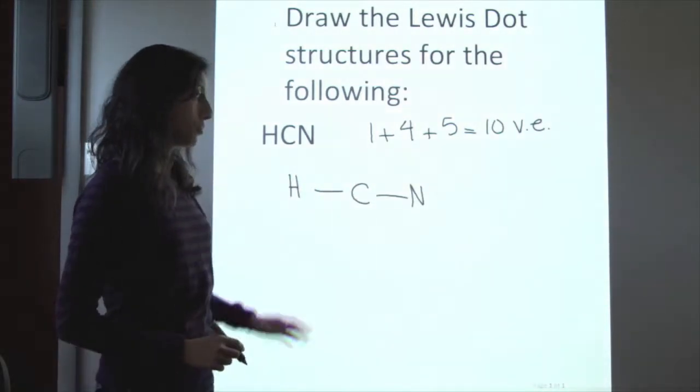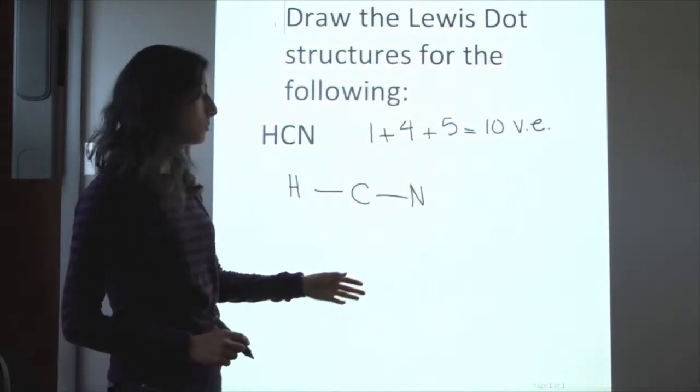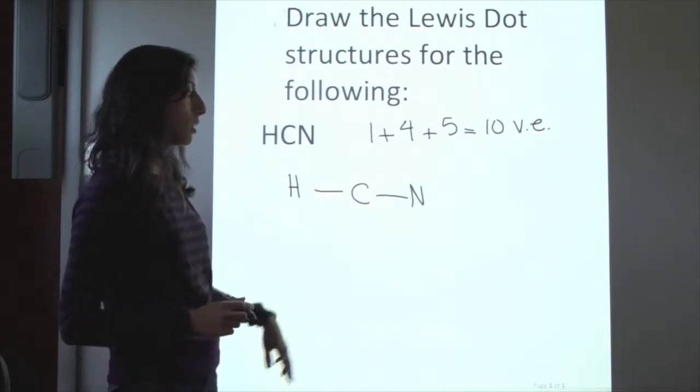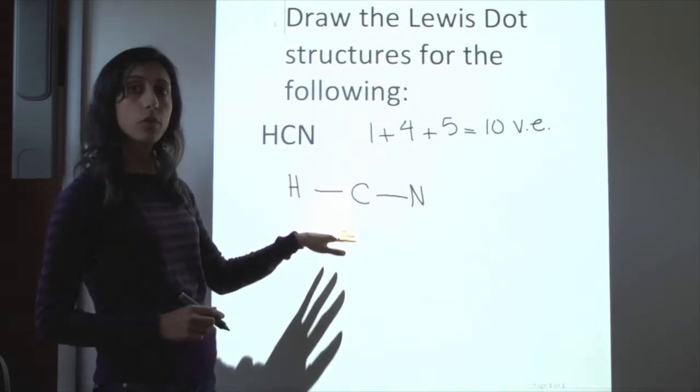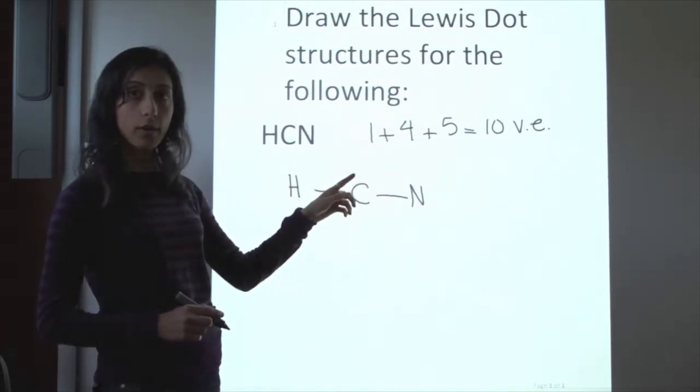So this is the second step, you just draw out your atoms and connect them by bonds. Each bond represents two electrons. So far we only have four electrons in our structure. Well, we know that we have to have ten.